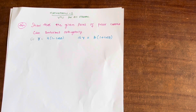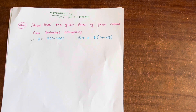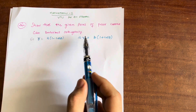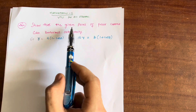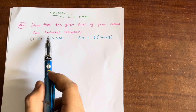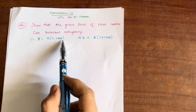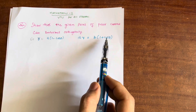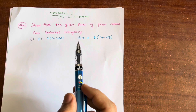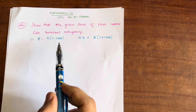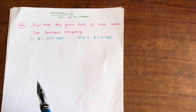Dear first semester VTU students, hope you are all doing well and hope you have started your preparation for the mathematics subject. So far we have discussed some derivations and also questions from angle between radius vector and tangent. Today I am with a super important question which is a 7 or 8 marks question. Almost the first module is the same for all the streams, so this question will be important for all streams.